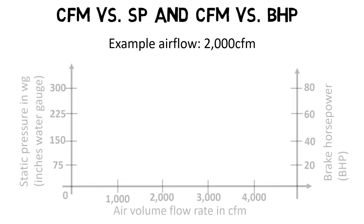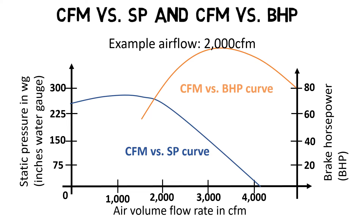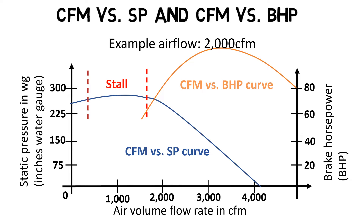The blower diagram usually consists of two curves: the CFM versus SP curve, showing the relation between static pressure and air volume flow rate; and the CFM versus BHP curve, showing the relation between the fan's air volume flow rate and the brake horsepower. A typical blower used in wastewater treatment is a direct drive, centrifugal type blower. The flat section is called the stall region, which is the range where the blower is unstable and should not be operated.